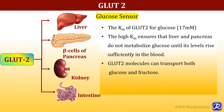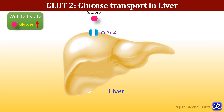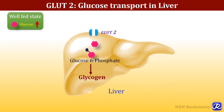GLUT 2 molecules can transport both glucose and fructose. In the liver, GLUT 2 transporters are responsible for glycogen formation — when blood glucose level is high, glucose enters the liver via GLUT 2, is immediately trapped as glucose 6-phosphate, and is channeled into glycogen synthesis. In well-fed conditions, glucose is phosphorylated by glucokinase to glucose 6-phosphate, and this glucose 6-phosphate is channeled for glycogenesis.